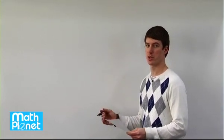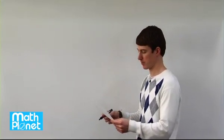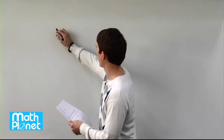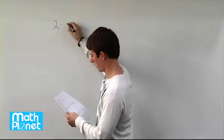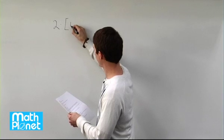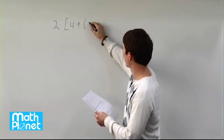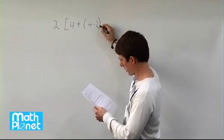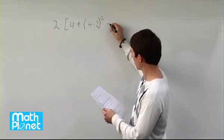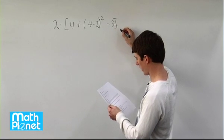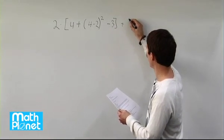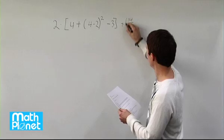Here we have an arithmetic expression that we want to simplify to get a final answer. The expression is: 2 times bracket 4 plus parentheses 4 minus 2 quantity squared minus 3 close bracket plus 14 over 2.